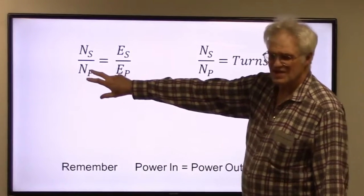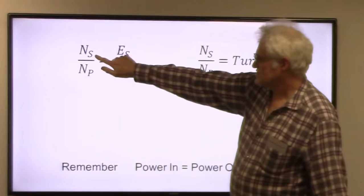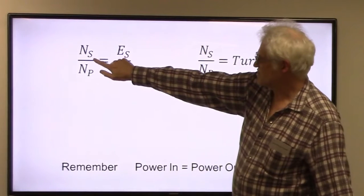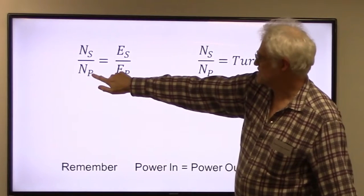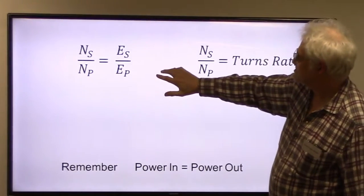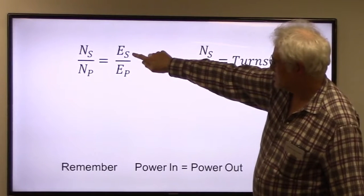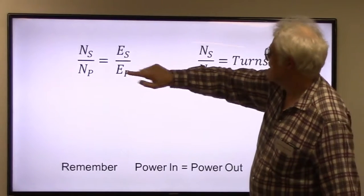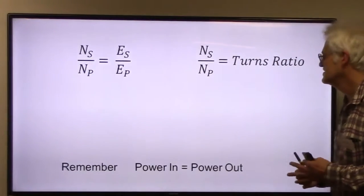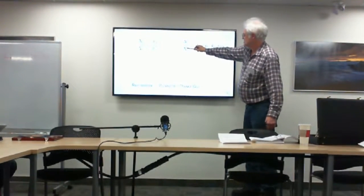Everything in a transformer works in ratios. The number of turns in the secondary compared to the number of turns in the primary gives exactly the same ratio as the secondary voltage versus the primary voltage. This ratio is called the turns ratio.